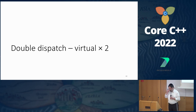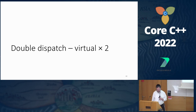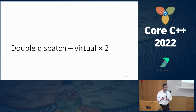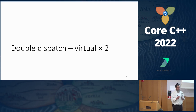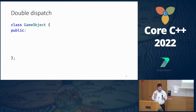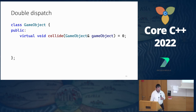The first of the better solutions is what's called double dispatch. The idea of double dispatch is more of the same: if virtual functions helped us solve half the problem, let's add more virtual functions — and they will solve the other half. We go again to the game object class, and again the same 'collide' with a game object.